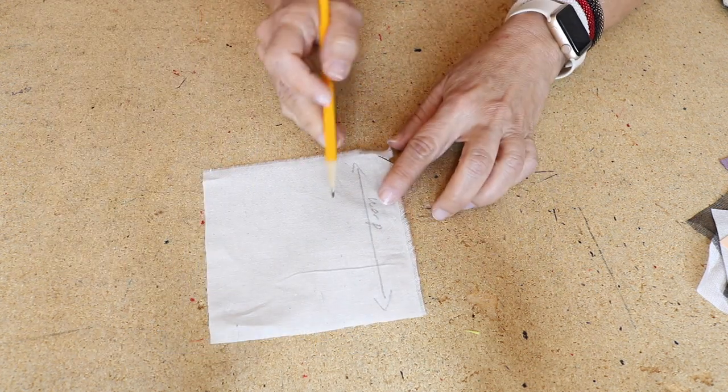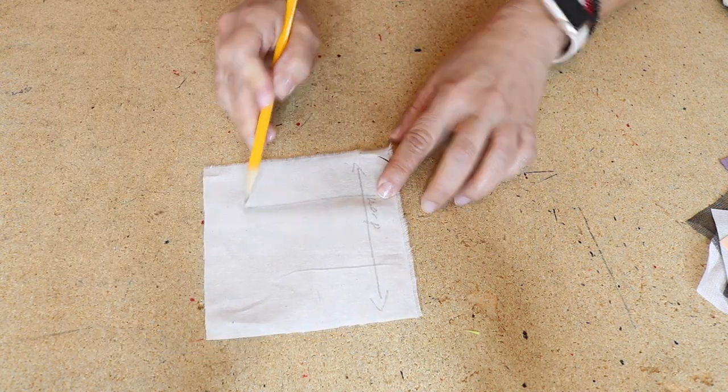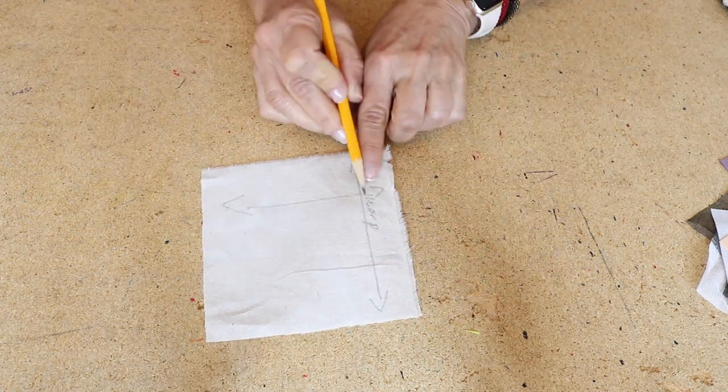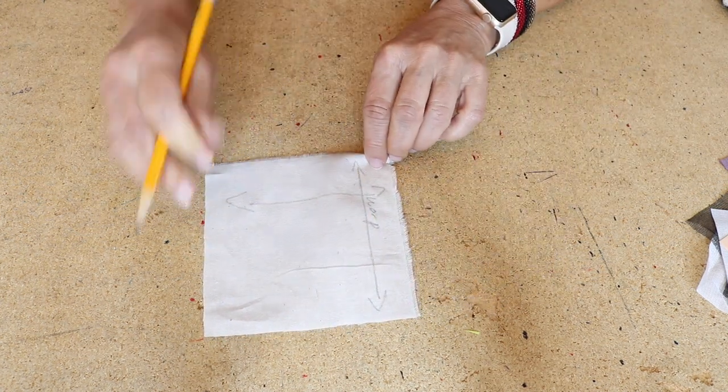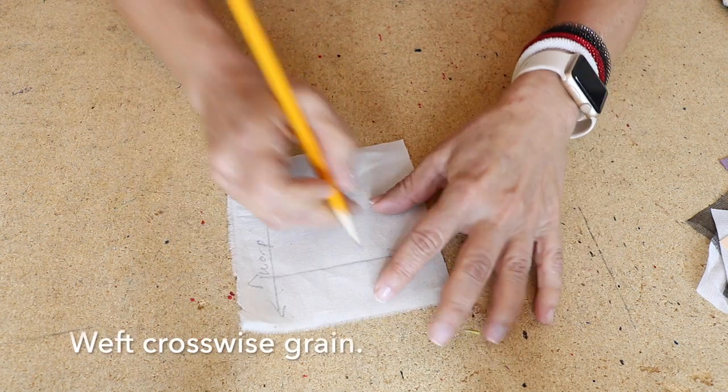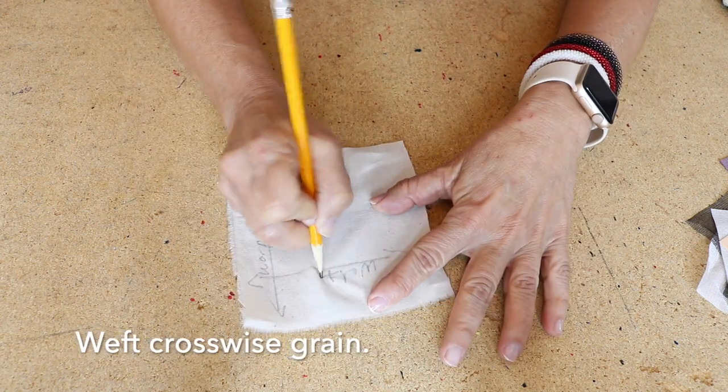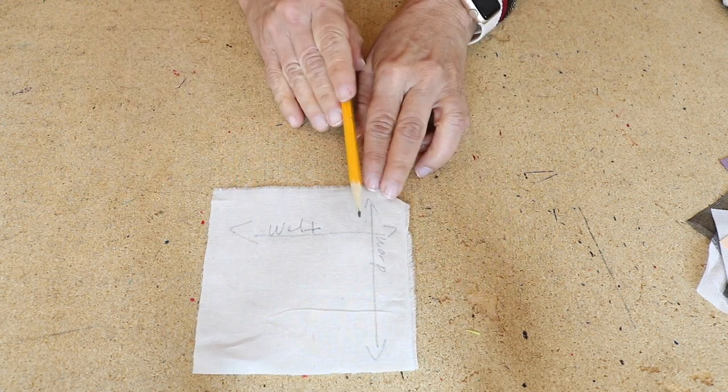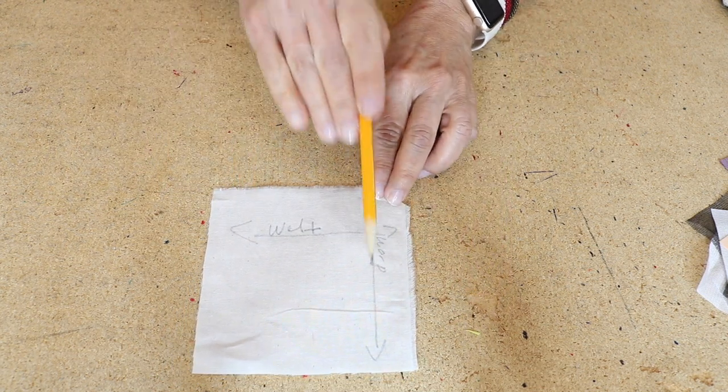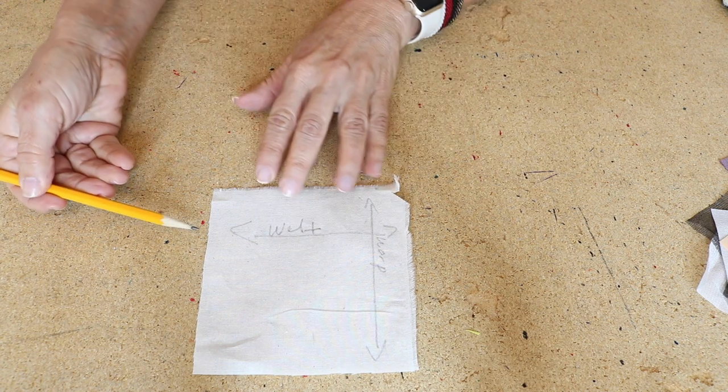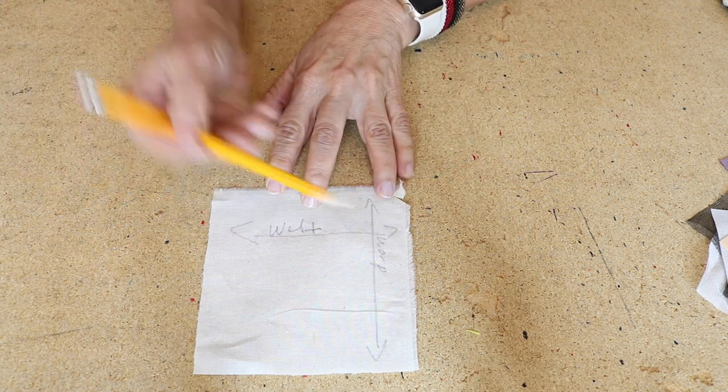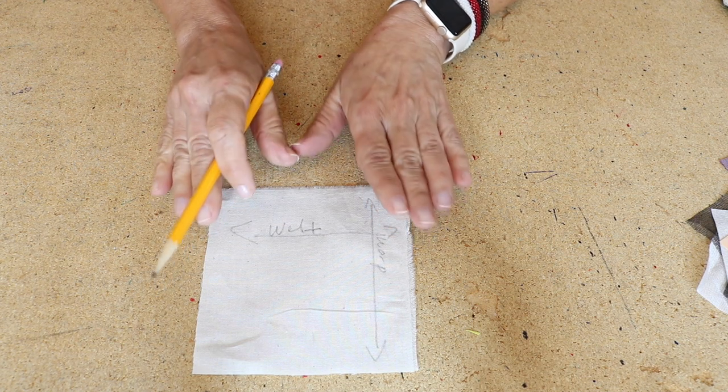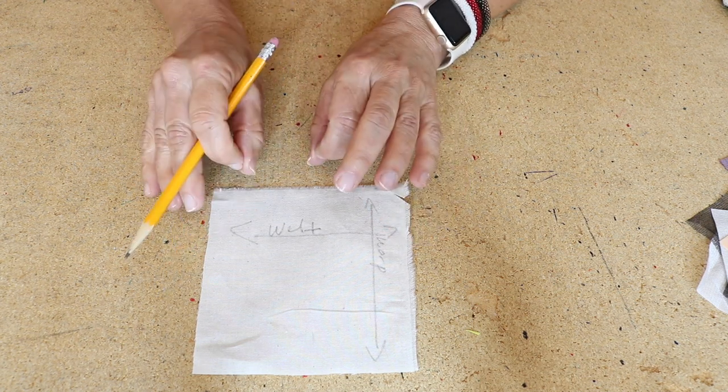And the ones that are going perpendicular or crosswise to the vertical lines is called the weft. So just so you know that fibers are going this way, lengthwise, and they're going crosswise, all the time. That is the way all fiber, all fabric is made generally.